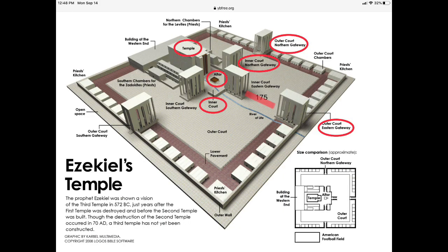Ezekiel 44: the man took Ezekiel back to the eastern gate, but it was closed. The Lord said, 'This gate must remain closed. It will never again be opened. No one will ever open it and pass through it, for the Lord has entered here.' The man brought Ezekiel to the northern gate, where Ezekiel saw the glory of the Lord had filled the temple. He fell face down to the ground.